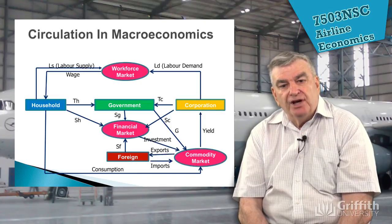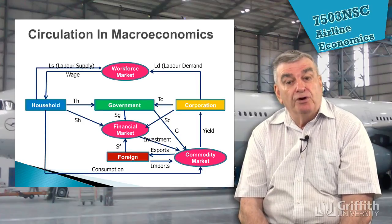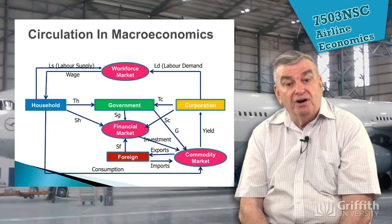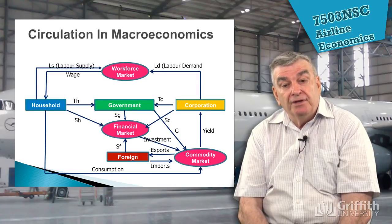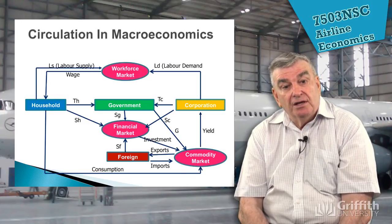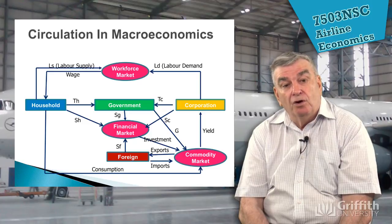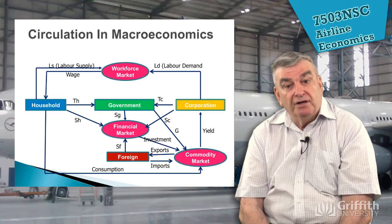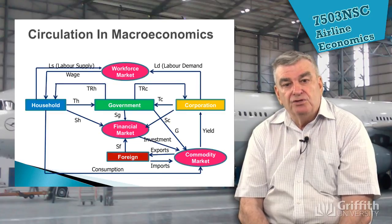We'll look at imports and exports, which becomes very important for airlines when purchasing foreign aircraft, as foreign currencies come in. We'll also look at currency changes as part of the macroeconomic system. This affects households — when your dollar is worth more overseas you may be prepared to travel abroad, but when your dollar drops people stop travelling overseas. We'll look at all these forces, how they interact, and the whole business of taxation.